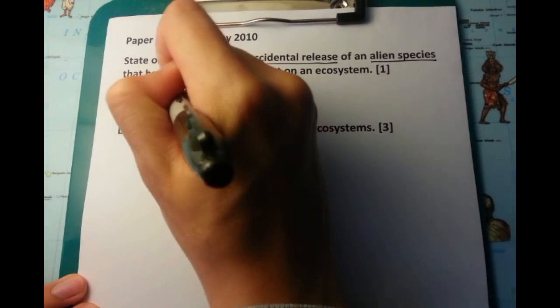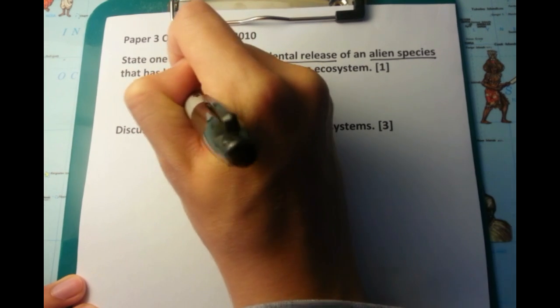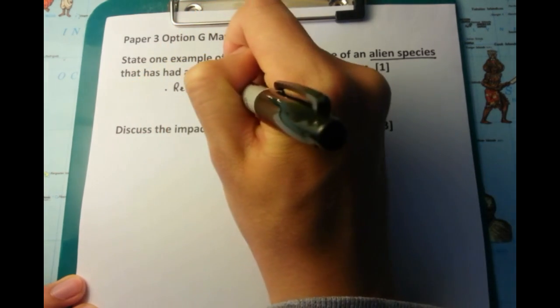State one example of the accidental release of an alien species that has had a significant impact on an ecosystem.